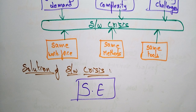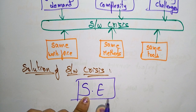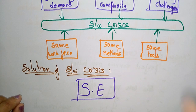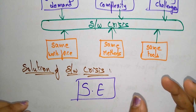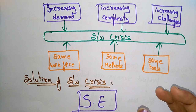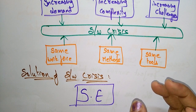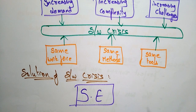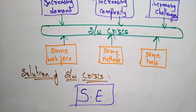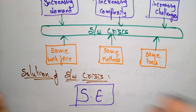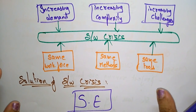Software engineering is the solution for software crisis because software engineering is an application of engineering to develop software in a systematic method. If you follow that systematic method, software crisis will not occur. Whenever a change is required it will be made, whenever manpower is required it will be added, whenever new tools or technology are required they will be incorporated. That is the main solution for software crisis.